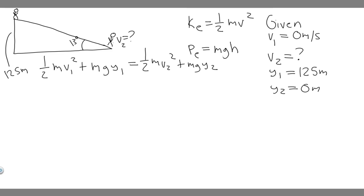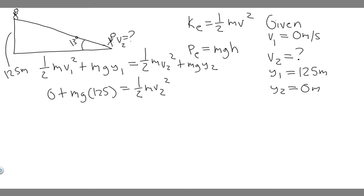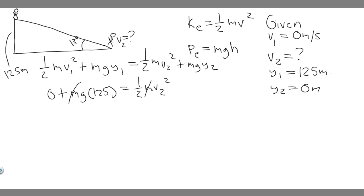Some variables cancel out. V sub one is zero, so one-half m times zero squared becomes zero. So we have: zero plus mg times 125 equals one-half m v₂ squared plus mg times y₂, and y₂ is zero, so that term becomes zero too. Essentially, mg times 125 equals one-half m times v₂ squared. Notice our masses cancel out, so 125g equals one-half v₂ squared.